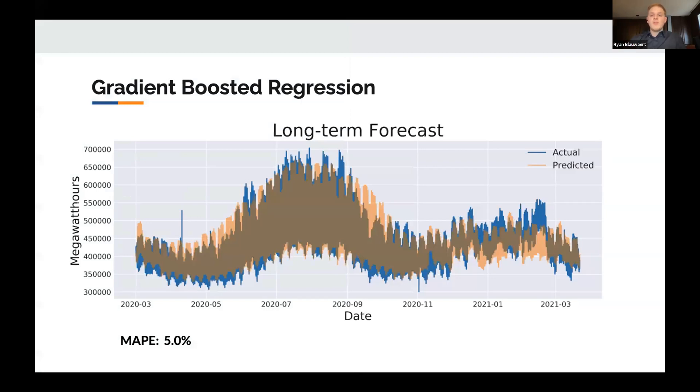So first, let's take a look at the gradient boosted regressor. In blue here you have the actual megawatt hours used for 2020, starting in March going to March of 2021. And then overlaid you have the predictions from the model. You can see it does a fairly good job of capturing the overall trend, but it does struggle a little bit where we have these peaks and valleys in electricity consumption. But generally speaking, that's okay. When we're looking at a year-long timeframe, we really just want to look at the range of possible values that we can make business decisions based on.